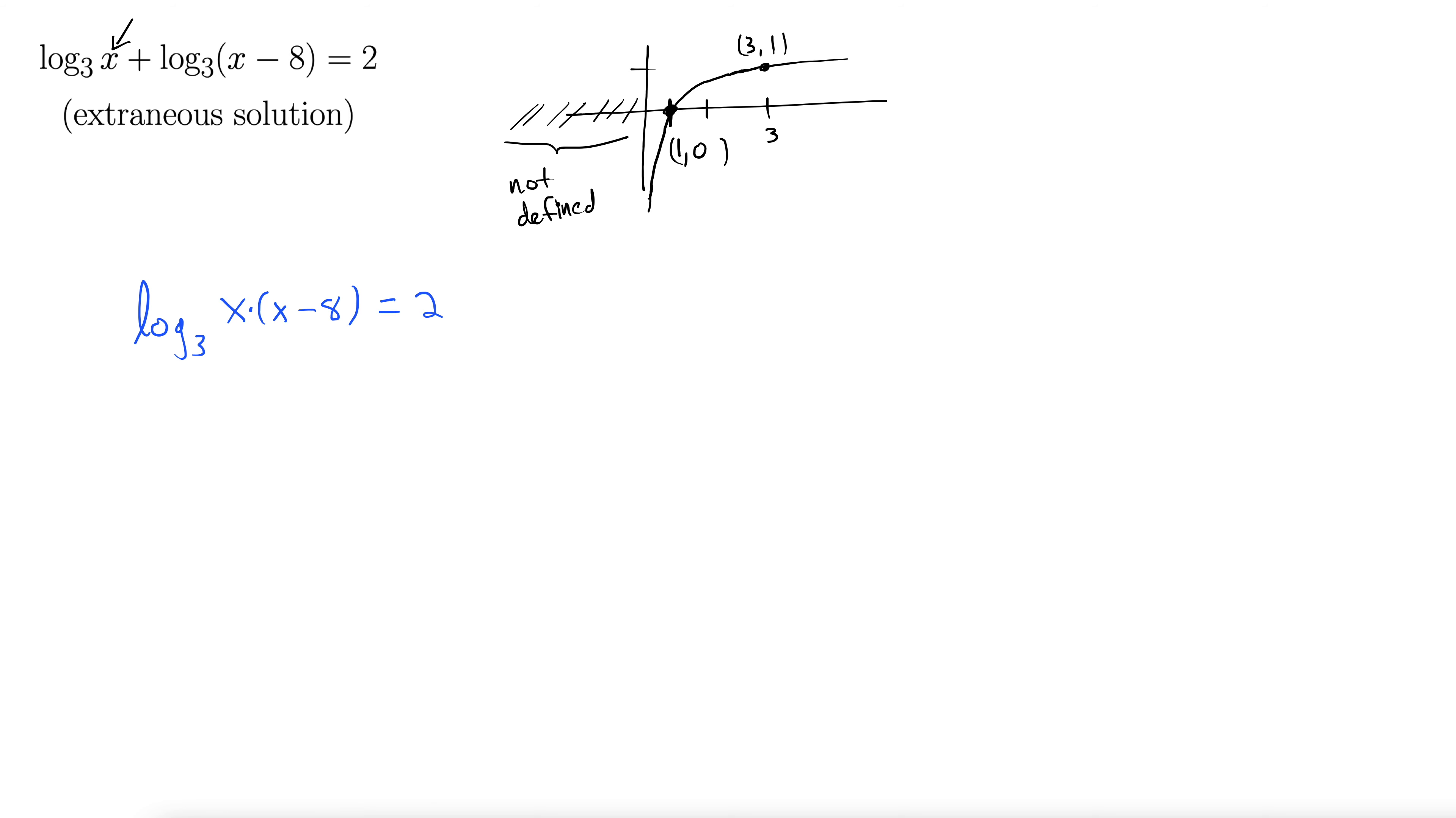Now we'll convert this into exponential form to solve it. So you start with the base 3. So 3 around outside to our power. That's our exponent. So 3 to the power of 2, back inside for the equals. 3 to the power of 2 equals all this stuff, x times x minus 8. Great. Now we're done with the logarithm. We just solve what we have left.